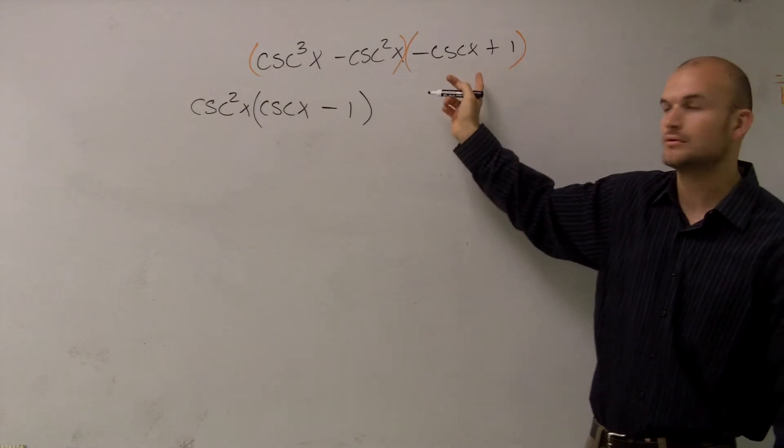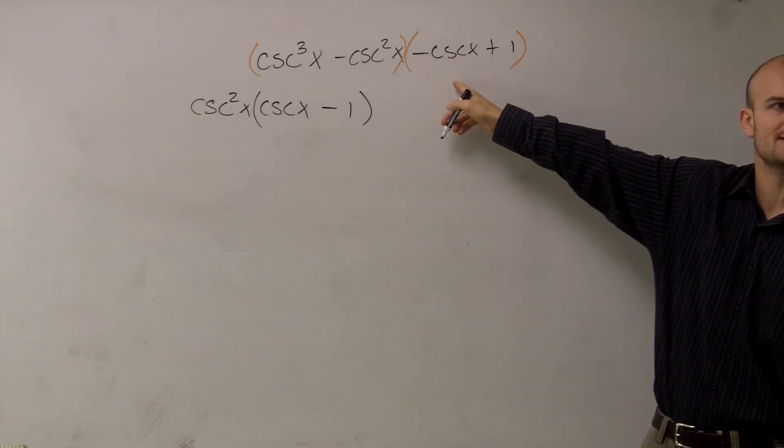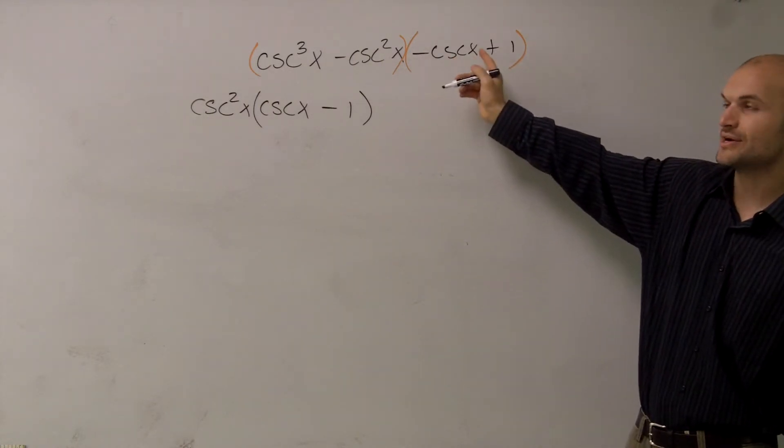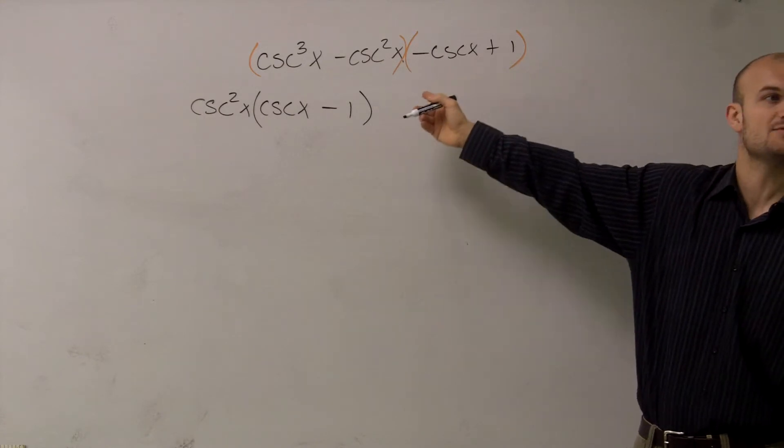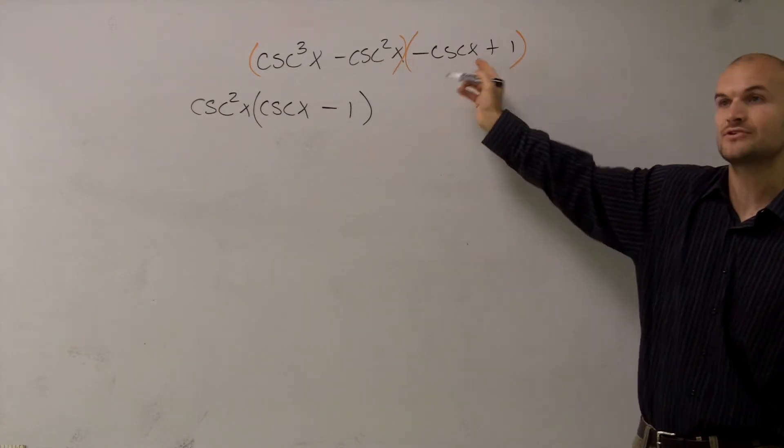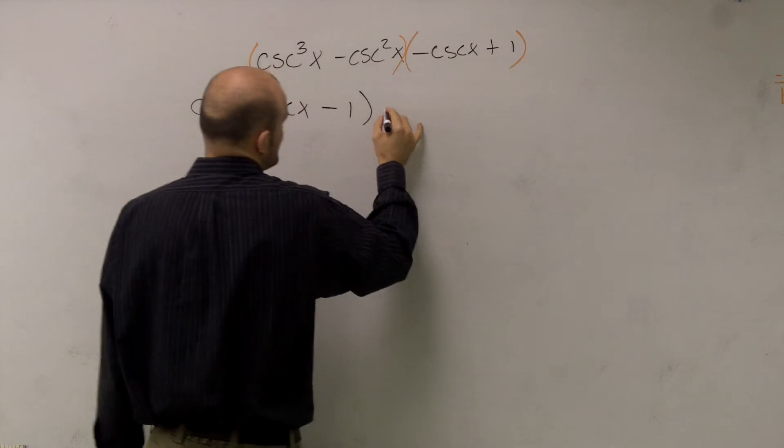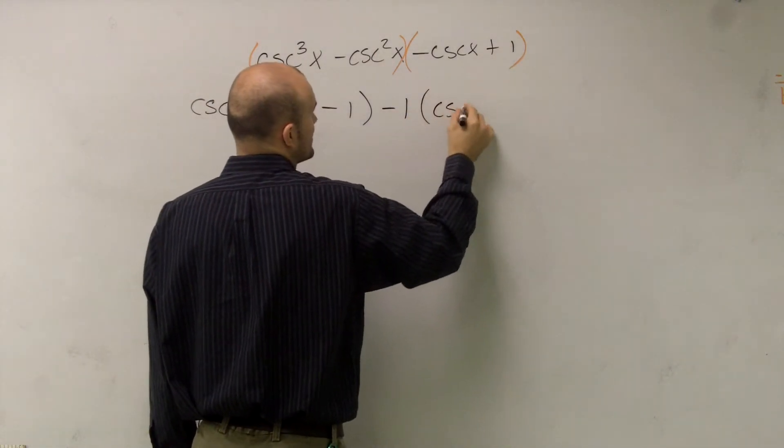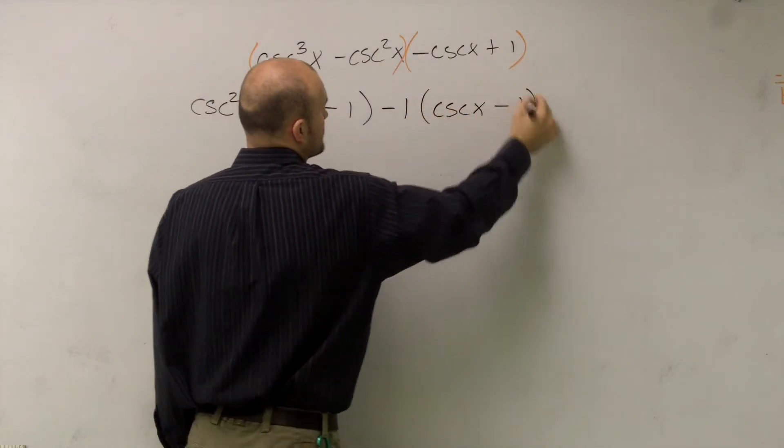So instead of factoring out a 1, because there is no greatest common factor here, or I'm sorry, there's no other number besides 1 that's the greatest common factor, I'm going to want to factor out a negative 1. So what I'll do is I'll factor out a negative 1, and that will leave me with a positive cosecant of x minus 1.